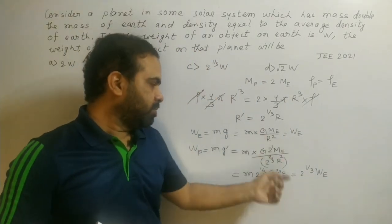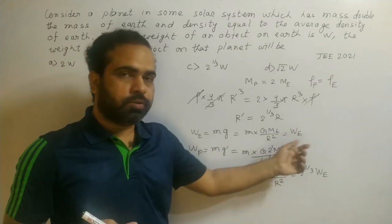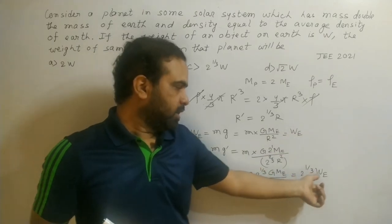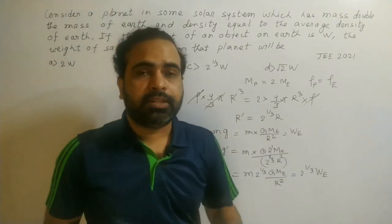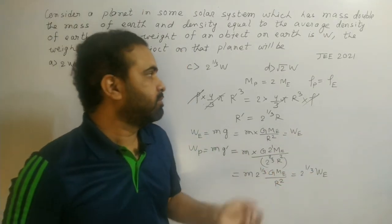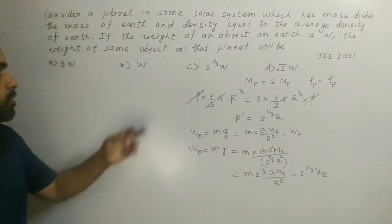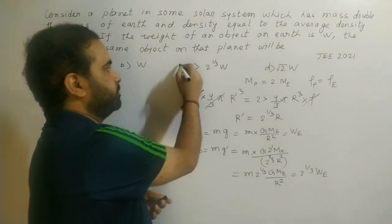So the final answer is: the weight on the planet is 2^(1/3) times the weight on Earth. This matches the correct option.